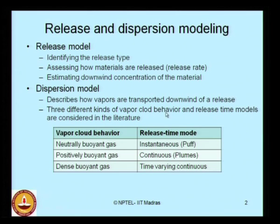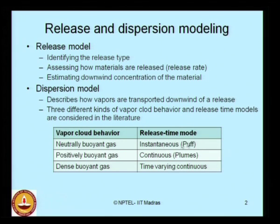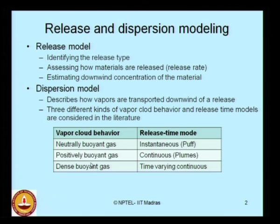Three kinds of vapor cloud behavior and release time models are considered in the literature. For a neutrally buoyant gas, we use the puff model, which handles instantaneous release. For a positively buoyant gas, we use the plume model, which handles continuous release. For a dense buoyant gas, we use time-varying continuous models.